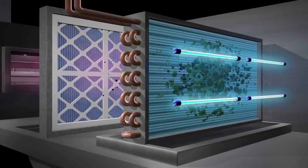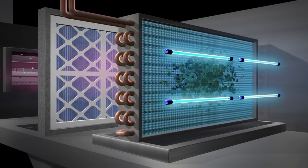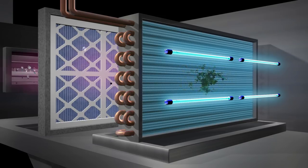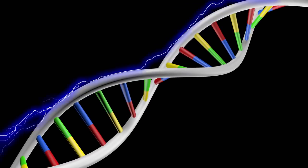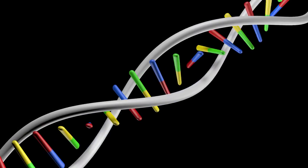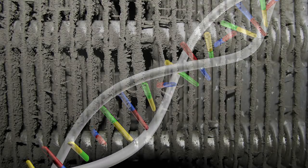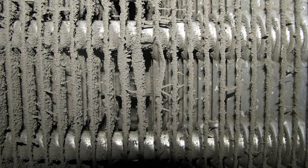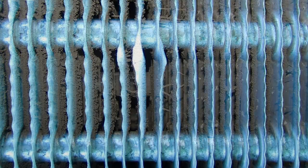By positioning Sterile Air's high output UVC emitters at the coil, one can eliminate mold by destroying the DNA inside the microbes. Once the DNA is destroyed, the microbe can neither grow nor duplicate, so it dies.